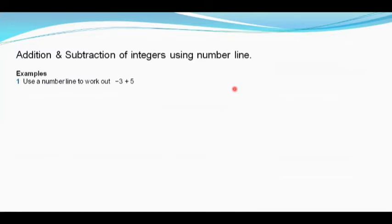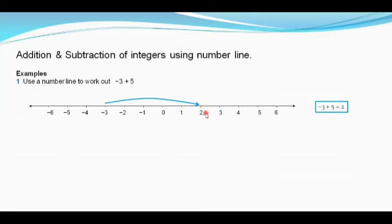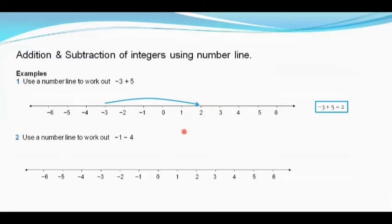Use a number line to work out minus 3 plus 5. On the number line we first move to minus 3. When we have to add a positive integer we move five places towards the right. Moving five places towards right, we reach 2. So minus 3 plus 5 is 2.